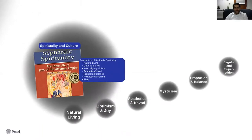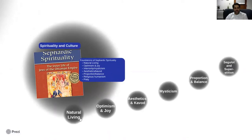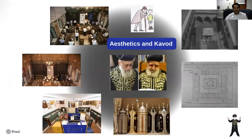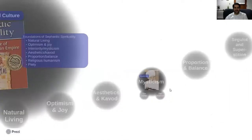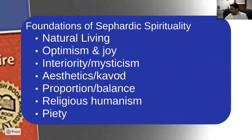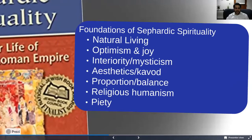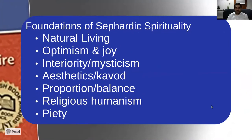We are in Sephardic spirituality and culture. We dealt with the first three topics - aesthetics and decor, where we talked about the different synagogues, Torah scrolls, garb, and clothing. Now we're going to look at the handout. Here are some bullet points that Mark Angel highlighted in his book on Sephardic spirituality. Today we're going to deal with bullet points three, five, and one more.